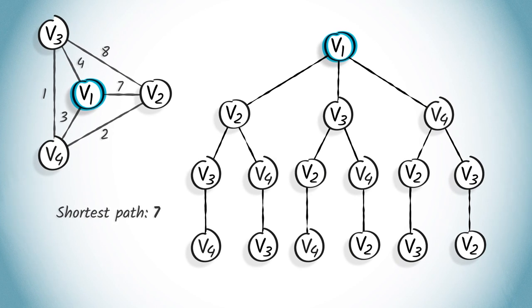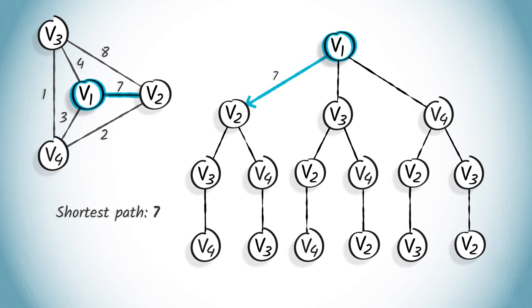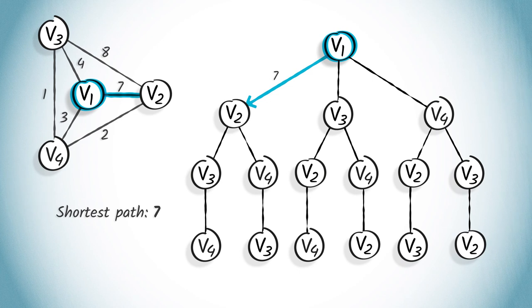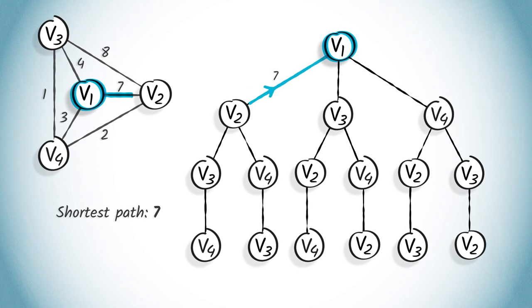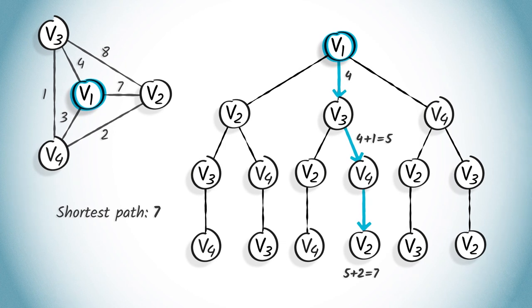From V1, there's only one option left, going to V2. It would already cost 7, which is as much as our current best route, so we cannot expect to find the shortest path in this direction. So, we can conclude that the shortest route has a length of 7, and yet, we've only explored a fraction of the tree of all possible paths. So, the backtracking solution has a much lower complexity than the brute force approach.